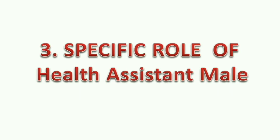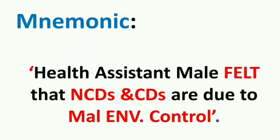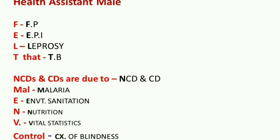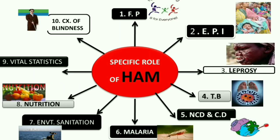Specific role or functions of health assistant male — the mnemonic is 'HEALTH ASSISTANT MALE FELT THAT NCDS AND CDS ARE DUE TO MAL ENVIRONMENTAL CONTROL.' F stands for family planning; E for expanded program on immunization; L for leprosy; T for TB; NCDS AND CDS for non-communicable diseases and communicable diseases; MAL for malaria; E for environmental sanitation; N for nutrition; V for maintaining vital statistics; CONTROL for control of blindness. If the area is endemic, the health assistant male has additional duty in relation to the national health program.